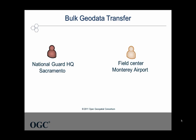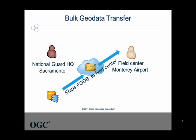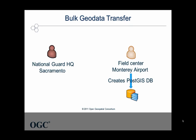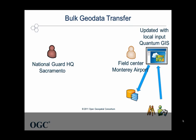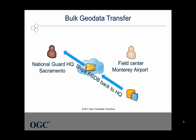Lance, at the California National Guard headquarters in Sacramento, creates a file geodatabase using ESRI's ArcGIS and ships it to the field center at Monterey Airport. Using the file geodatabase API, Paul at the field center uploads the file geodatabase bulk data into a Postgres spatial database server. Then, using OpenGeo Suite, Paul updates the data using input from local observers and creates a new file geodatabase.